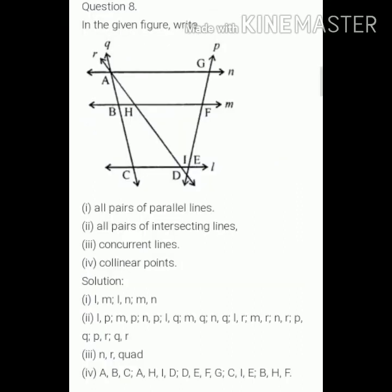Question number eight. First part is, all pairs of parallel lines. So, look at the figure. L and M, L and N, M and N. There are three pairs of parallel lines.